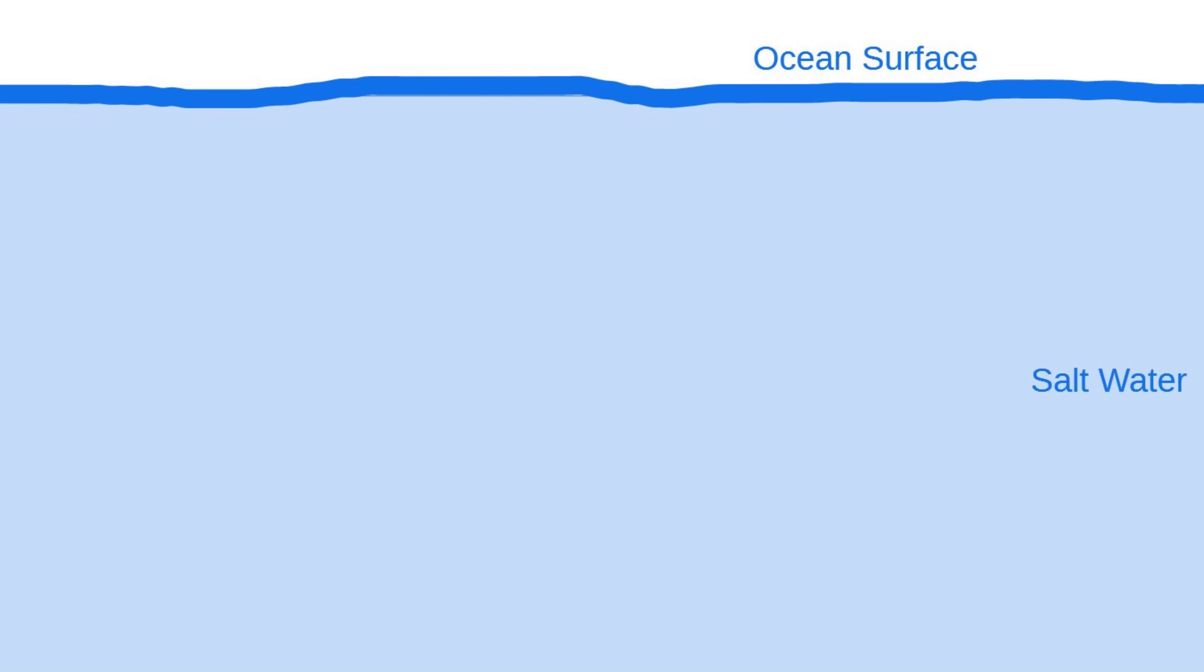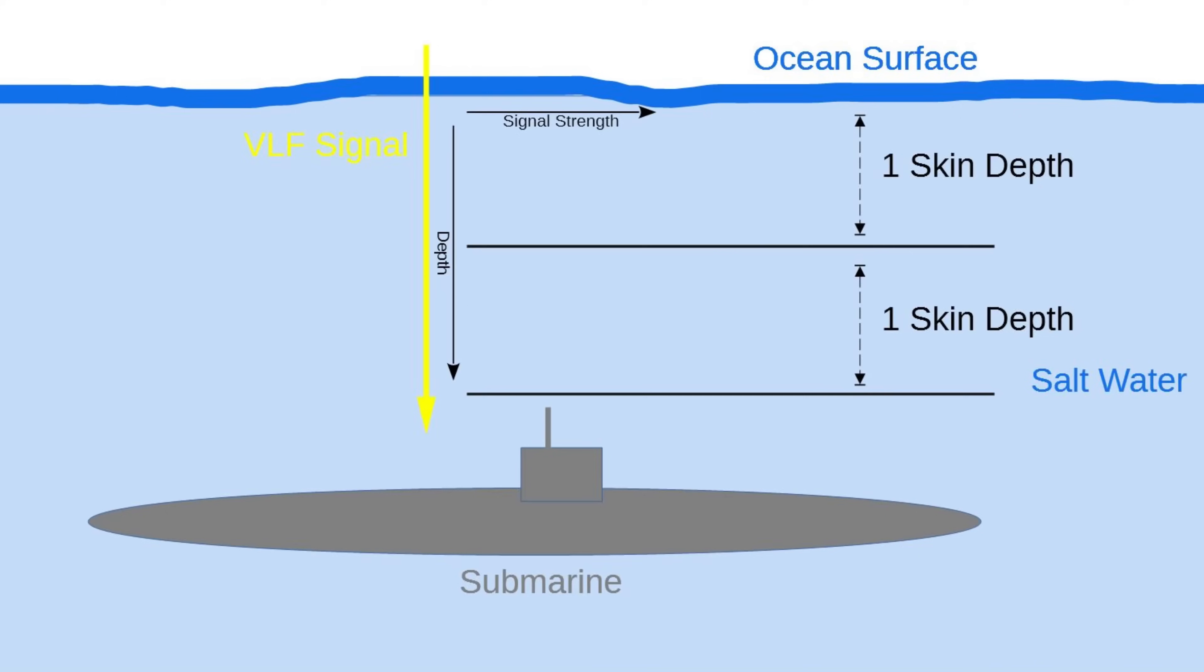I should point out that skin depth is not a precise boundary. At a depth of one skin depth, the EM field drops to about a third of the original value, or a tenth of the power. And one more skin depth is one-third of that. So, for Lualuale signals, my guess is the skin depth in seawater is about 10 meters or 30 feet, depending on the amount of salinity in that part of the ocean.